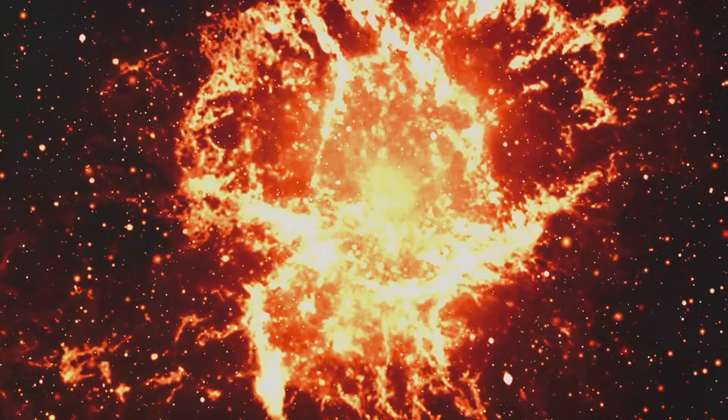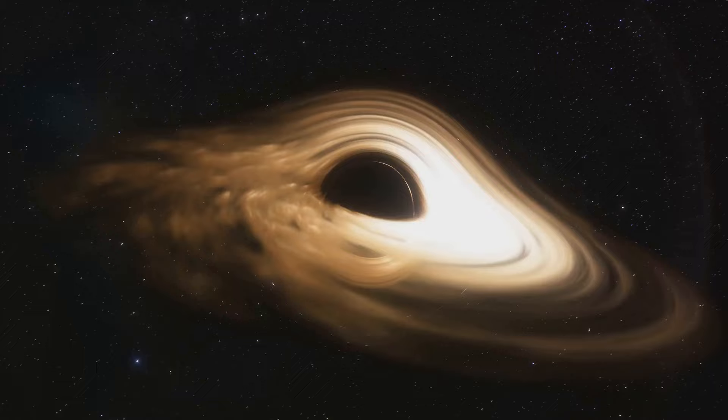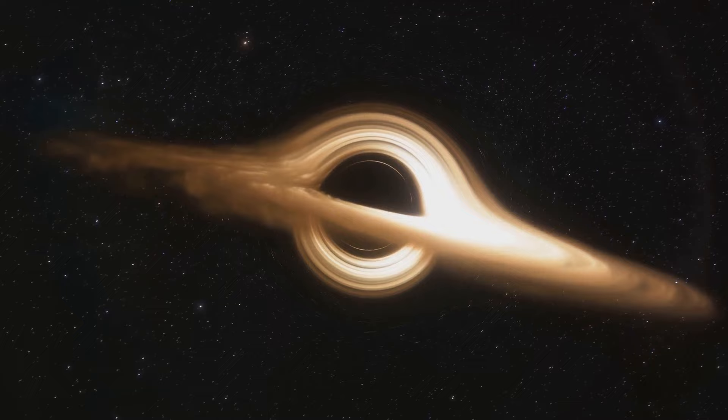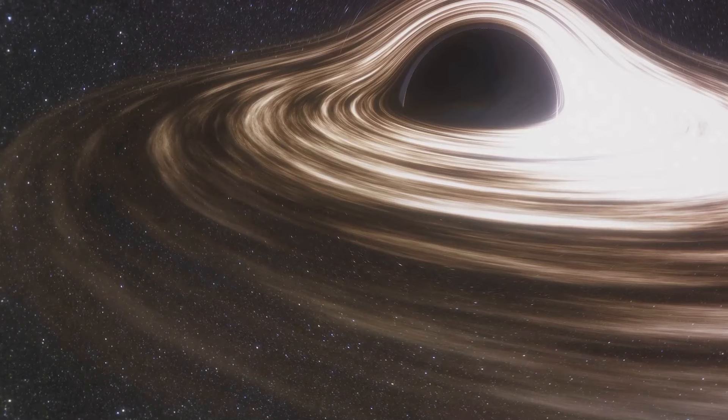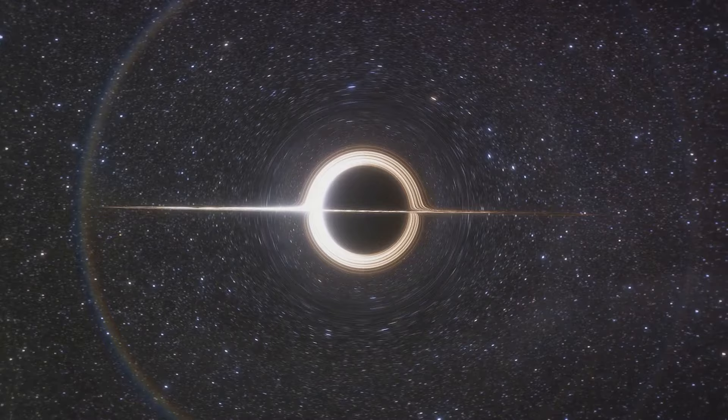But what about dark energy? Well, if dark matter's role is to hold things together, dark energy is doing the opposite. It's pushing everything apart. It's the name we give to the unknown force that's causing our universe to expand at an ever-increasing rate. Unlike dark matter, which clumps and clusters, dark energy is evenly distributed across the universe. So, how do we distinguish between the two? Well, it's all about the effects they have on the universe. Dark matter's effects are gravitational. It pulls things together. On the other hand, dark energy works against gravity, causing the universe to expand faster and faster.